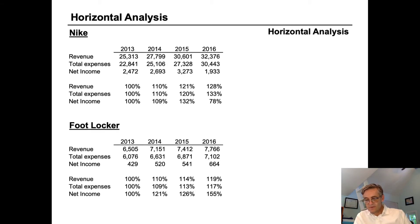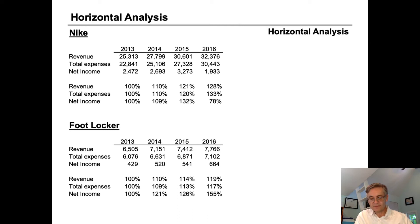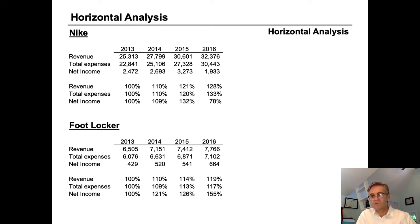By adding horizontal analysis for Foot Locker, we can see very quickly that revenue for Foot Locker is 119 percent of what it was in 2013, compared with Nike's 128 percent. So Nike grew faster than Foot Locker. But looking at expenses, Foot Locker's net income is 155 percent — 55 percent more than it was four years earlier — compared to Nike's 78 percent. So we can say that Foot Locker is doing a better job of growing net profit even on slower sales growth.